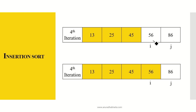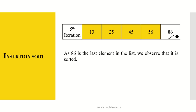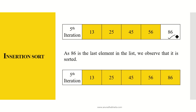At the fourth iteration, i is 56 and j is 86. Since 56 is less than 86, the final list after the fourth iteration is 13, 25, 45, 56, and 86. In the fifth iteration, 86 is the last element of the array and is automatically sorted. So the fifth iteration gives us the sorted list: 13, 25, 45, 56, and 86. If there are five elements, we need five minus one, that is four iterations. In general, for n elements we need n minus one passes.